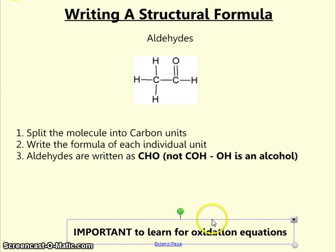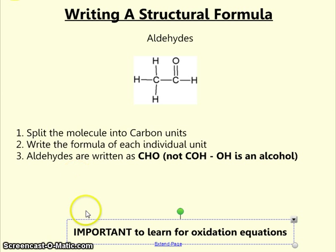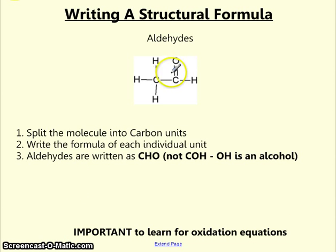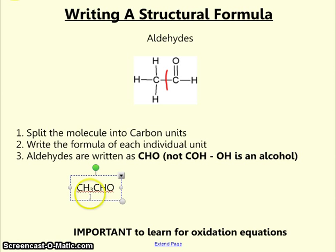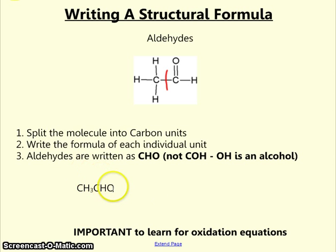Aldehydes — primary alcohols get converted to aldehydes, so writing the structural formula for an aldehyde is very important. Here we've got ethanal, so we split it up into two carbon units. The important aspect is that the aldehyde is written as CHO, not COH, because COH denotes an alcohol. It will take a bit of practice to get used to writing aldehydes as CHO.